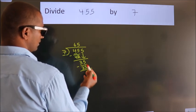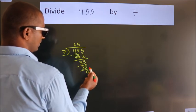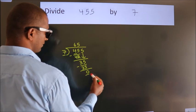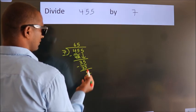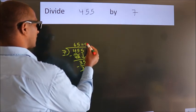After this, no more numbers to bring down. And we got remainder 0. So this is our quotient.